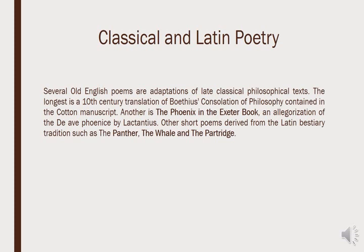There is also classical and Latin poetry. Several Old English poems are adaptations of late classical philosophical texts. The longest is a 10th-century translation of Boethius' Consolation of Philosophy, contained in the Cotton Manuscript. Another is The Phoenix in the Exeter Book, an allegorization of the poem De Ave Phoenice by Lactantius. Other short poems derived from the Latin bestiary tradition include The Panther, The Whale, and The Partridge. These were the classical and Latin poetry written in the time of the Anglo-Saxons.